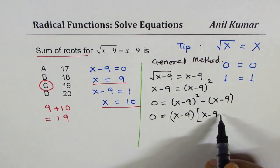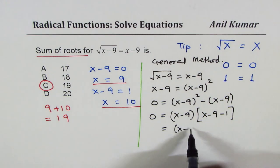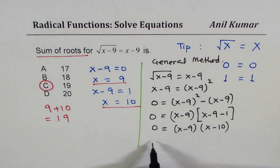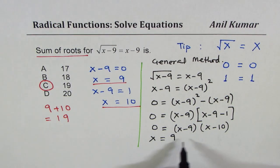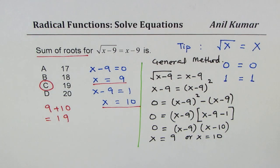From the first factor we get x minus 9, and from the second we get minus 1, and that gives us x minus 9 times x minus 10 equals 0. That gives us x equals 9 or x equals 10.